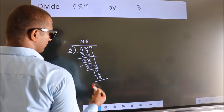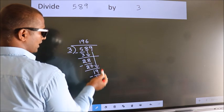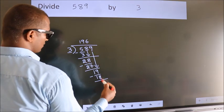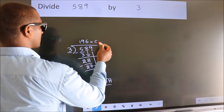Now, we subtract. We get 1. No more numbers to bring down. So, we stop here. This is our remainder. This is our quotient.